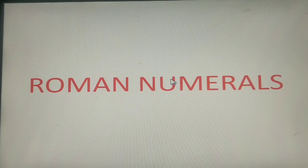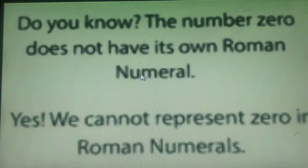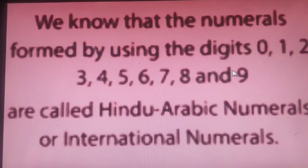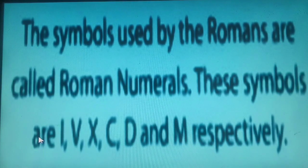Now children, let us continue with the last concept of this chapter, that is Roman numerals, which you have learnt quite much in your previous classes. Do you know that the number 0 does not have its own Roman numeral? We cannot represent 0 in Roman numerals. We know that the numerals formed by using the digits 0 to 9 are called Hindu-Arabic numerals or international numerals. The symbols used by the Romans are called Roman numerals. These symbols are I, V, X, C, D, and M respectively.